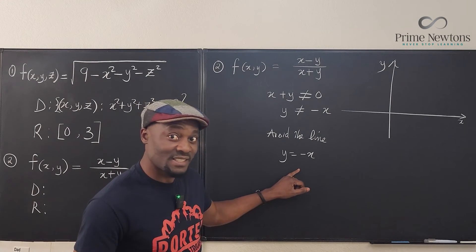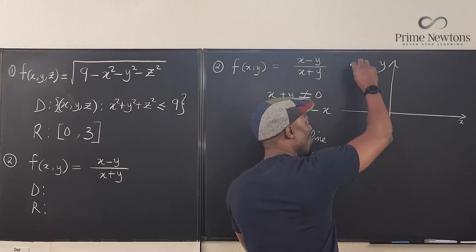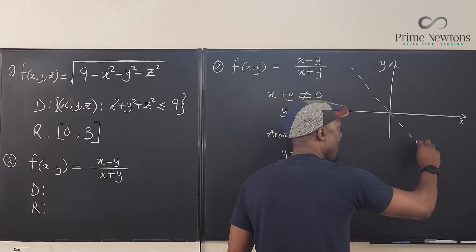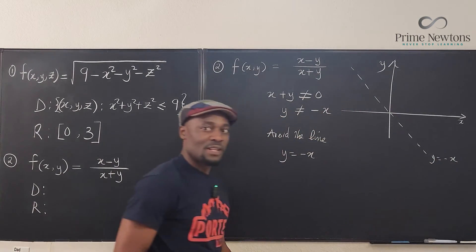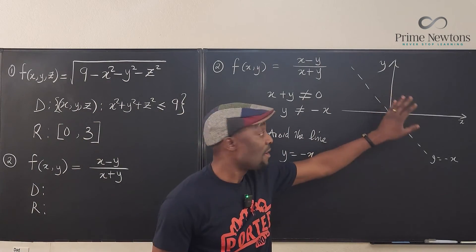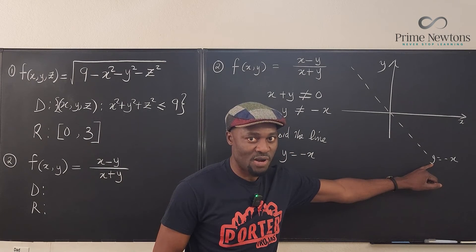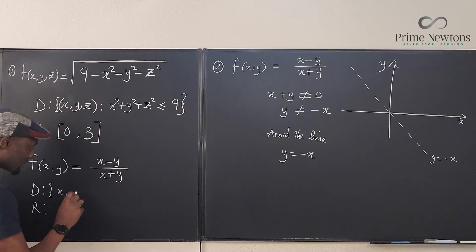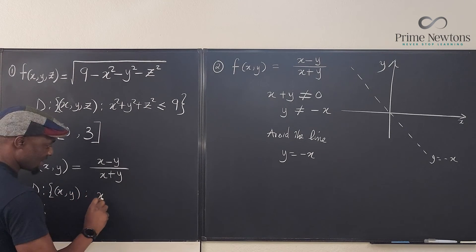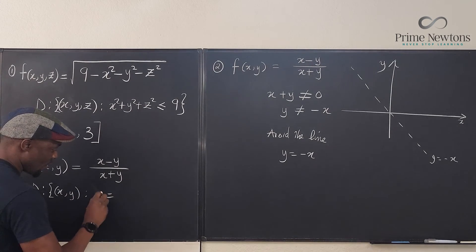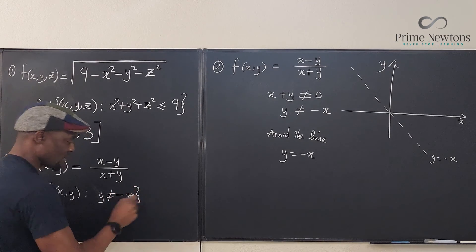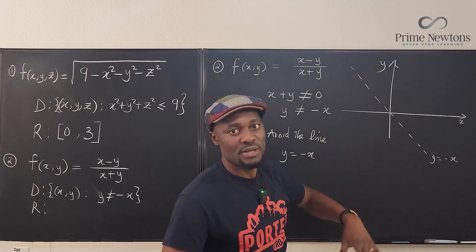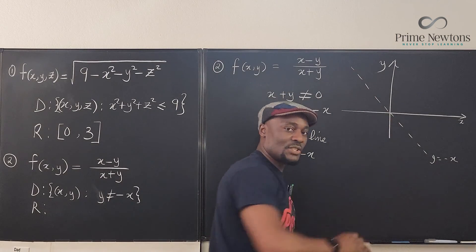What does that excluded line look like? It's the identity line with a negative slope — it goes diagonally across the plane. So the domain is the entire R2 plane, the entire XY plane, except for this line where Y equals negative X. We write the domain as the set of (x, y) such that Y is not equal to negative X. If sketching, draw the line as dotted to show it's excluded, and every other part with solid lines.